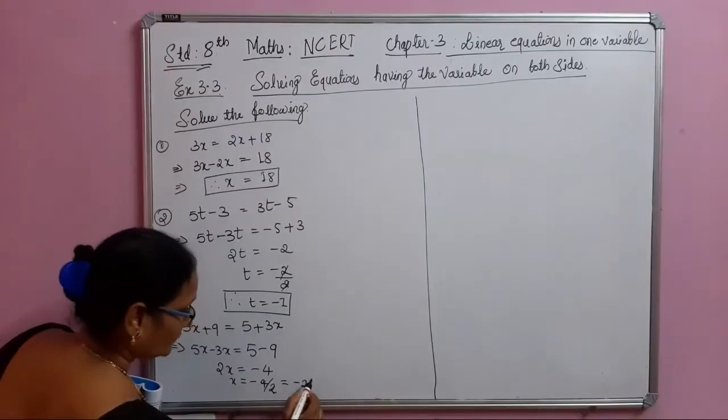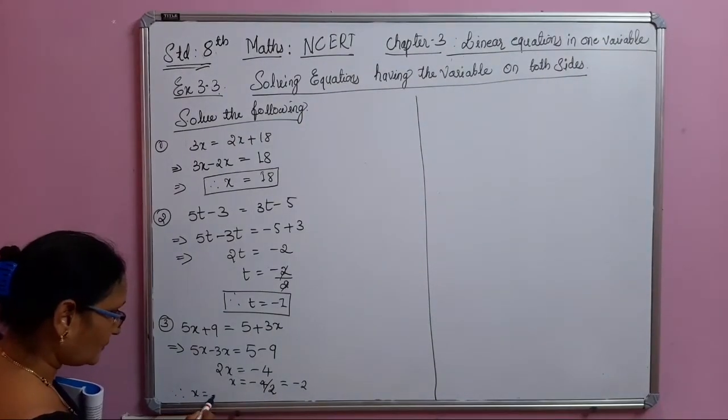The third problem is 5x plus 9 equals 5 plus 3x. We bring 3x to the left side: 5x minus 3x equals 5 minus 9. This gives 2x equals minus 4, so x equals minus 4 divided by 2, therefore x equals minus 2.